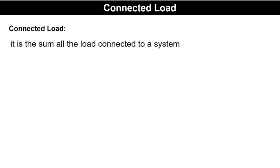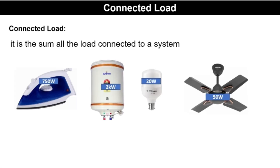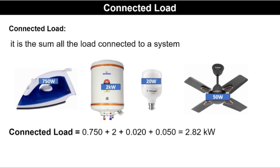Connected load is defined as the sum of all the loads connected to the system. Suppose in your house you have the following devices installed — the connected load will be the sum of all the power ratings of these devices. That is: 0.750 kW for the iron, 2 kW for the geyser, 0.020 kW for the bulb, and 0.05 kW for the fan. The total connected load of your house will be 2.82 kW.